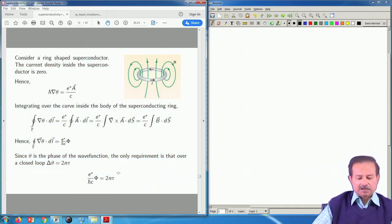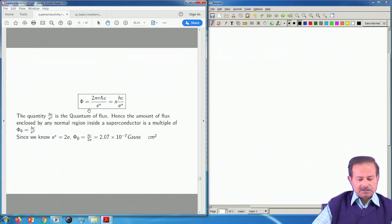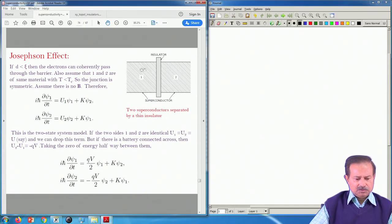Now, theta being the phase of the wave function, it has to be single valued over a closed loop. So the change will be either 0 or multiple of 2 pi and that immediately gives you the quantization. These fluxes are quantized and the quantum is n times 2 pi into hc by e*. We know that hc by e is the quantum of flux, here it is e* which will turn out to be 2e. So this is the value.